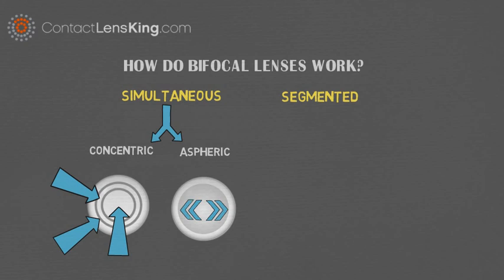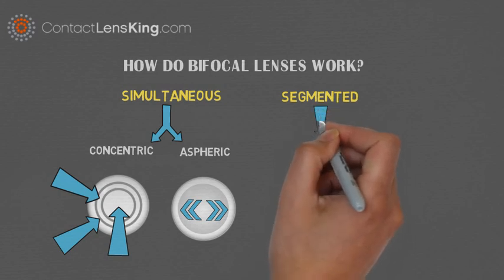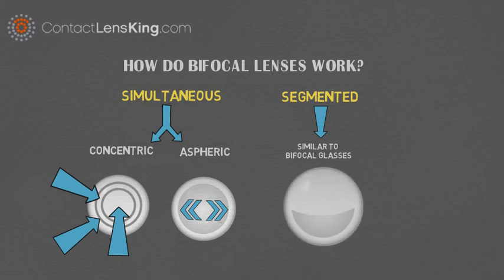The second group of designs are called segmented designs. This design is similar to bifocal eyeglasses, where the lower portion of the lens allows for near viewing of objects, and the rest of the lens is used for viewing distant objects.